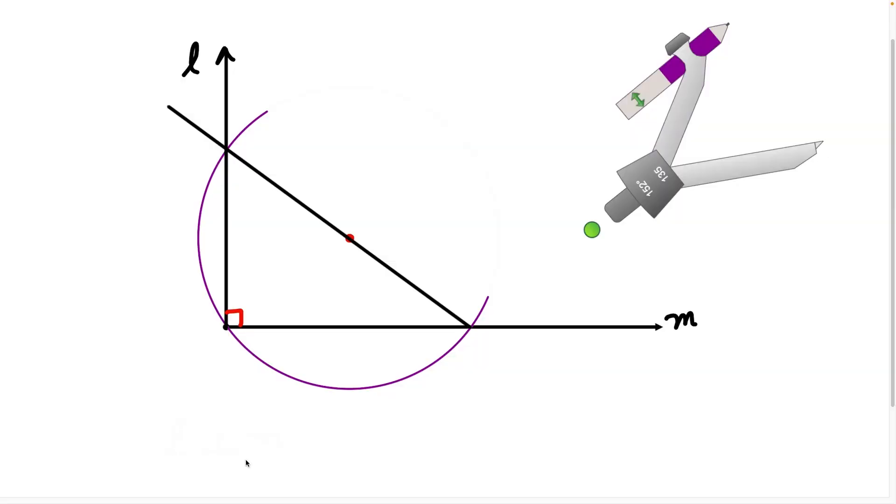We could throw in some labels here and draw our conclusion that L is perpendicular to M. Now real quick, what's the concept behind this? Why does this construction work?